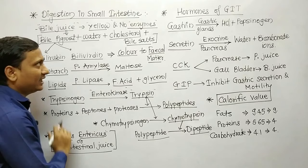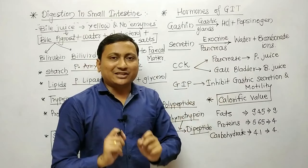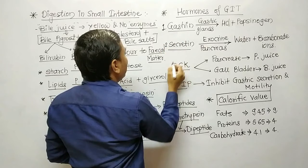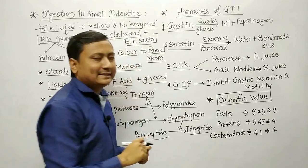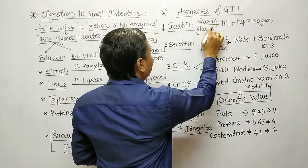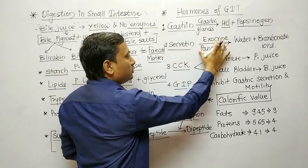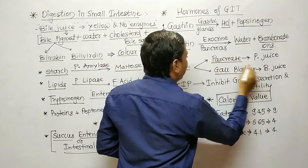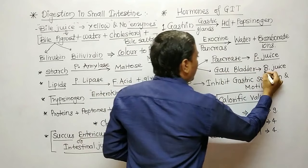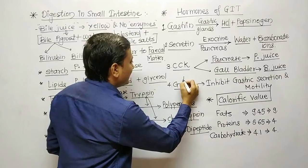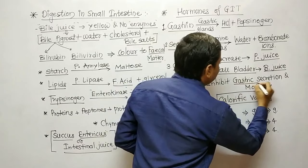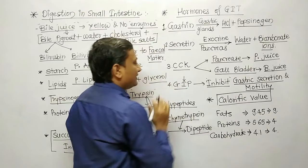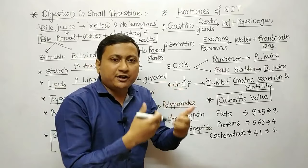The hormones of the gastrointestinal tract (GIT) include four hormones. First is gastrin, which acts on gastric glands for production of hydrochloric acid and pepsinogen. Second is secretin, which acts on the exocrine pancreas for production of water and bicarbonate ions. Third is CCK (cholecystokinin), which acts on the pancreas to produce pancreatic juice and on the gallbladder to produce bile juice. Fourth is GIP (gastric inhibitory peptide), which inhibits gastric secretion and gastric motility.